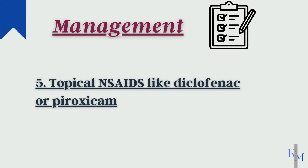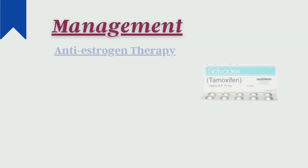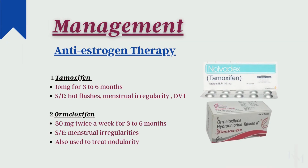Some patients do require medication. If the pain score is more than 3, you may consider giving medication. If the patient has hyperestrogenism, consider anti-estrogen therapy, androgens, or LHRH agonists. Tamoxifen is anti-estrogenic for the breast; the dose is usually 10 mg for 3 to 6 months. Side effects include hot flashes, menstrual irregularity, and rarely deep venous thrombosis.